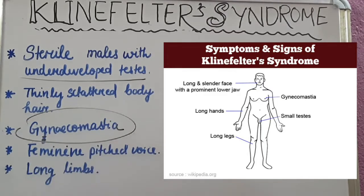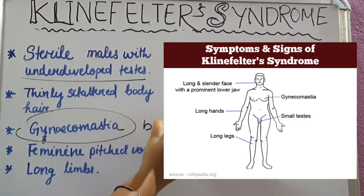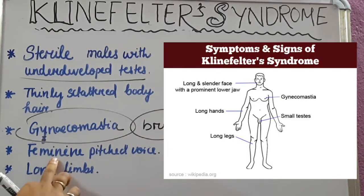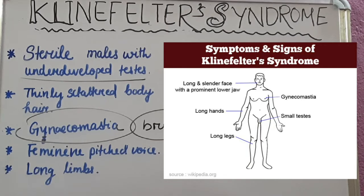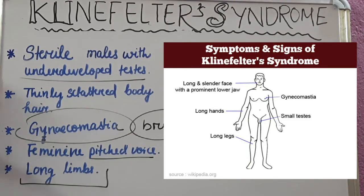Gynecomastia — meaning they develop breasts and some female characteristics. The males will also have a feminine pitched voice and long limbs. These are the main symptoms found in Klinefelter syndrome.